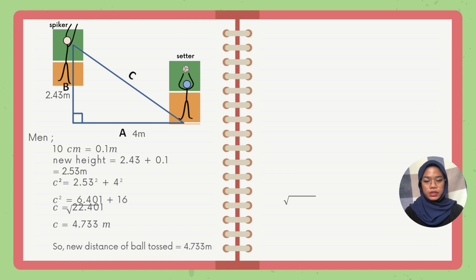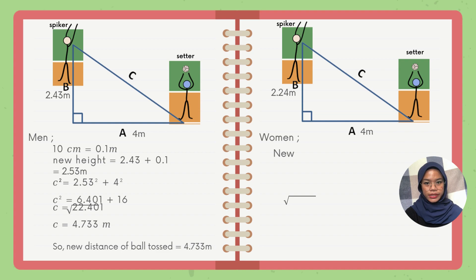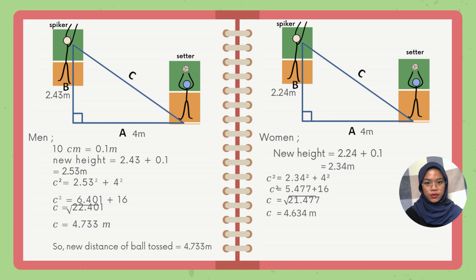For women, the new height is 2.24m plus 0.1m, which equals 2.34m. Using the same method: C squared equals 2.34 squared plus 4 squared. Solving the right side: C squared equals 5.477 plus 16. So C equals the square root of 21.477, and we get C equal to 4.634m. The new distance of ball toss for women is 4.634m.